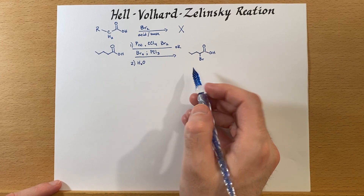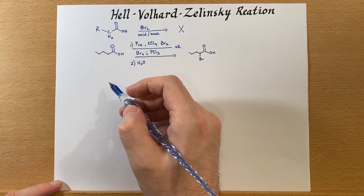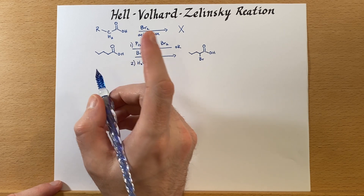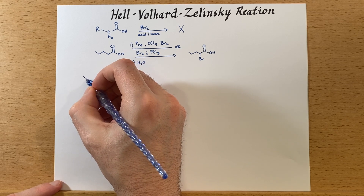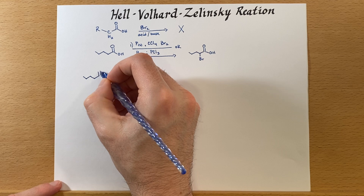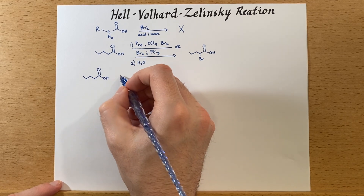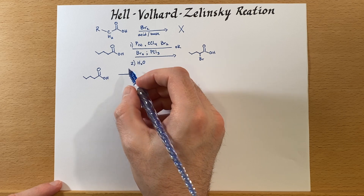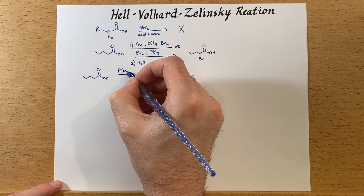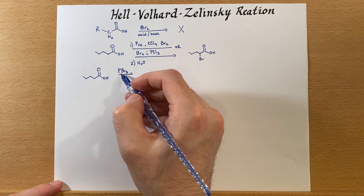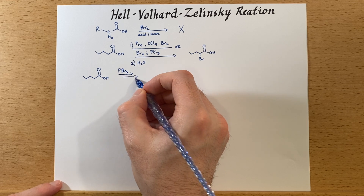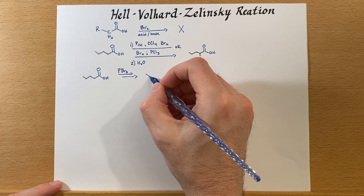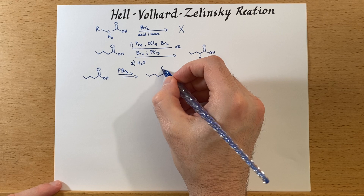We might ask: why does it work in this case when it doesn't work with direct bromination? Bromine is fairly reactive, so we're going to go pretty quickly through the mechanism and skip quite a few steps. Somewhere in this solution will be PBr3 — these conditions will generate PBr3, at least some. And then there are a few steps that will generate the acid bromide, just like we talked about in the previous video.